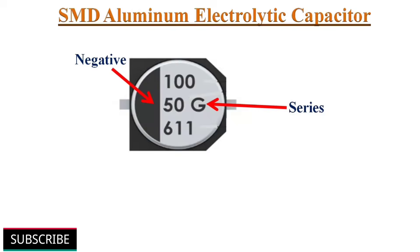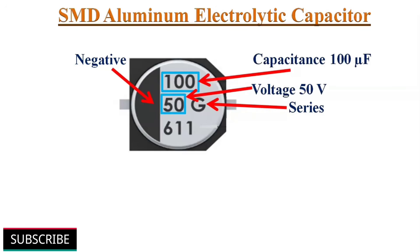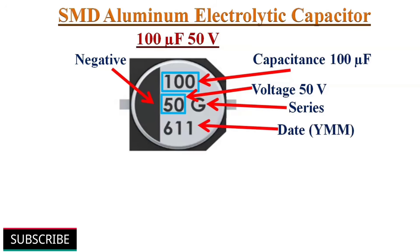Another format is Kemet's EDK series, where the capacitance in microfarads and voltage rating is directly printed on the surface. Here the capacitance value is 100uF 50V. The year and month of manufacture is printed at the bottom; this capacitor was manufactured in November 2006.